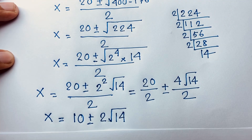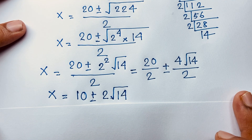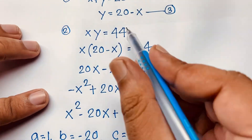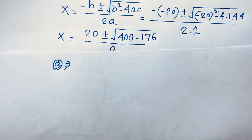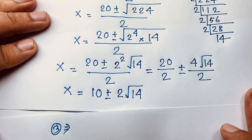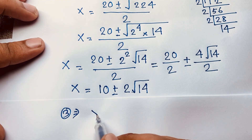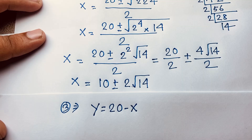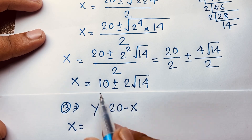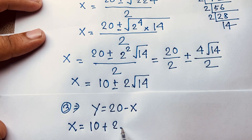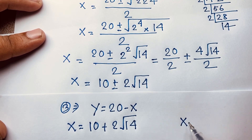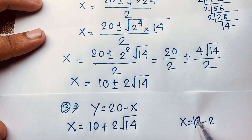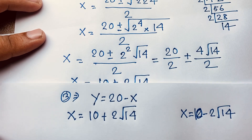Now we find y. Recalling our third equation: y is equal to 20 minus x. When x equals 10 plus 2 square root 14, and when x equals 10 minus 2 square root 14, we substitute each into y equals 20 minus x.